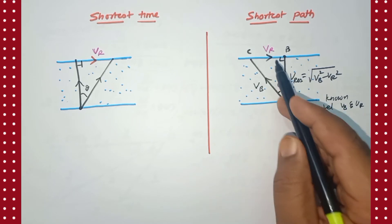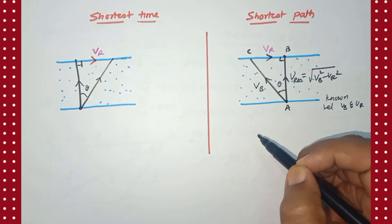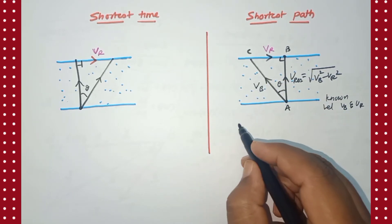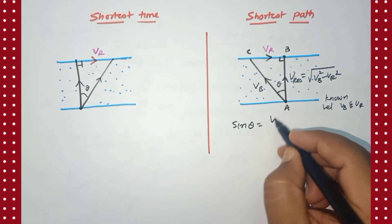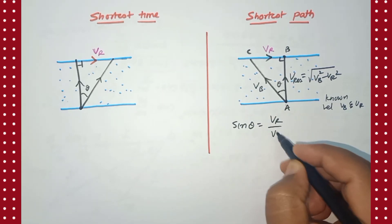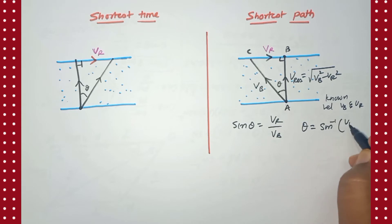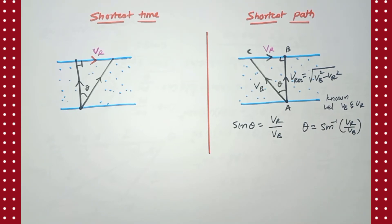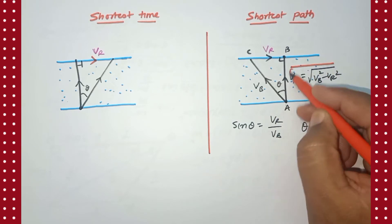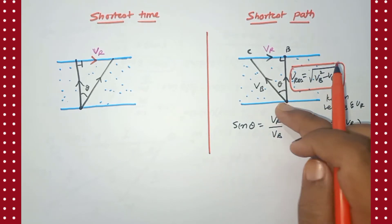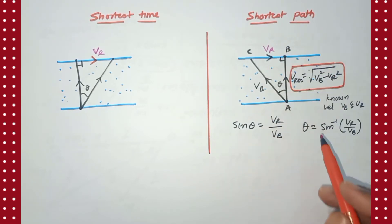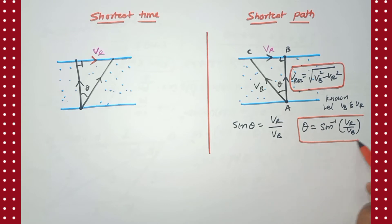The known velocities are vb and vr. We know the opposite side and hypotenuse, so we apply: sin θ = opposite side / hypotenuse = vr / vb. Therefore θ = sin⁻¹(vr / vb) — velocity of the river divided by velocity of the boat. So we have the resultant velocity and the direction with which the boat will reach the opposite bank.